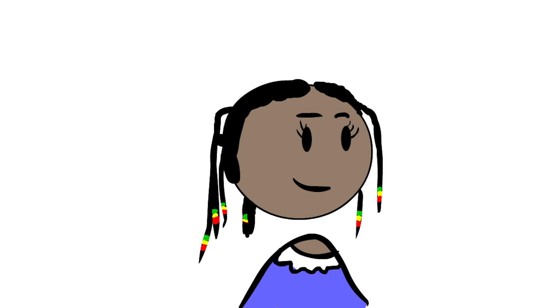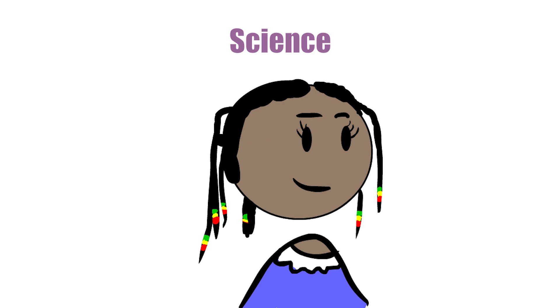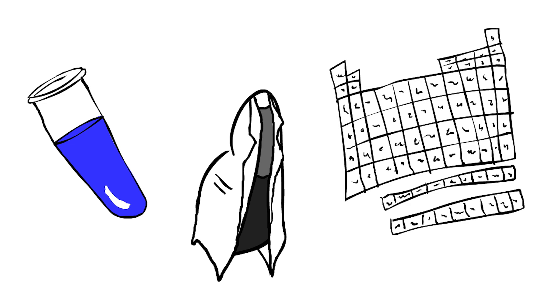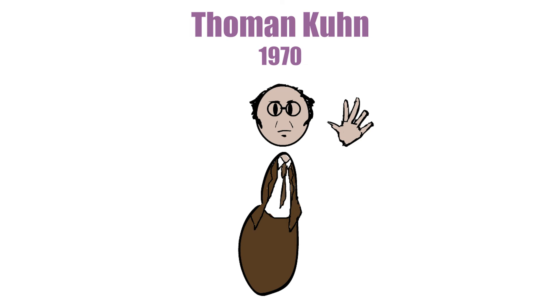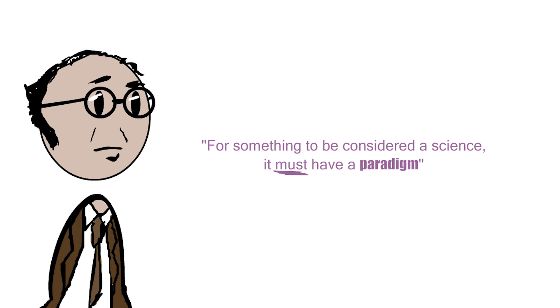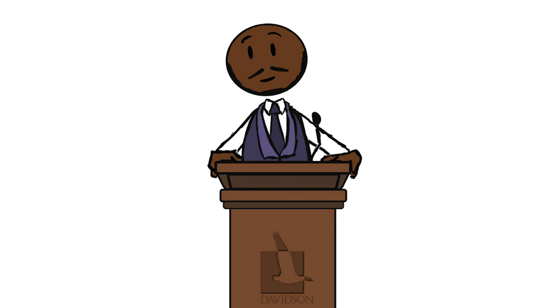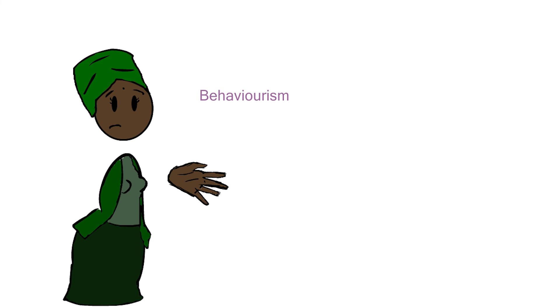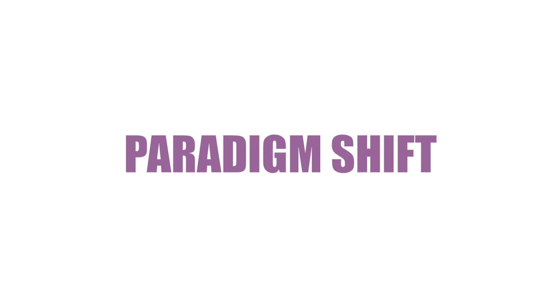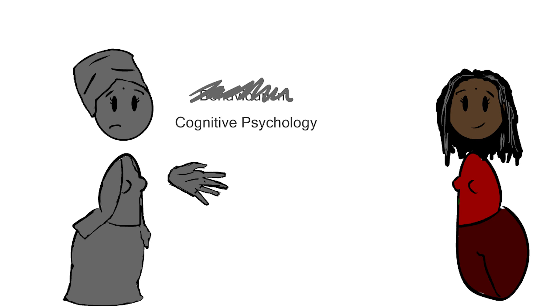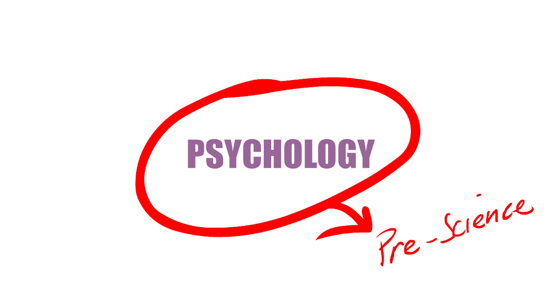Paradigm. When you hear the word science, do thoughts of psychology automatically pop into your head, or do you think more along the lines of test tubes, periodic tables, and lab coats? This question of whether psychology is in fact a science is not a new one. According to Thomas Kuhn, 1970, for something to be considered a science, it must have a paradigm — a set of principles, techniques, and methods which define a scientific discipline. There are some who believe psychology to have already had a paradigm established in behaviorism, which then underwent a change to cognitive psychology. When this happens, it is referred to as a paradigm shift. Conversely, others believe psychology to consist of many mini-paradigms, which leaves psychology in a sort of pre-science state, not quite acknowledged by all as a science.